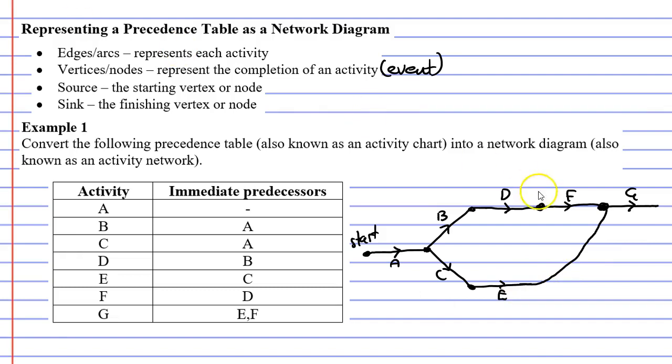We need to show the completion of activity G by drawing a vertex. This vertex is known as the finish, or also known as the sink, and this represents the completion of not just activity G, but the whole project.